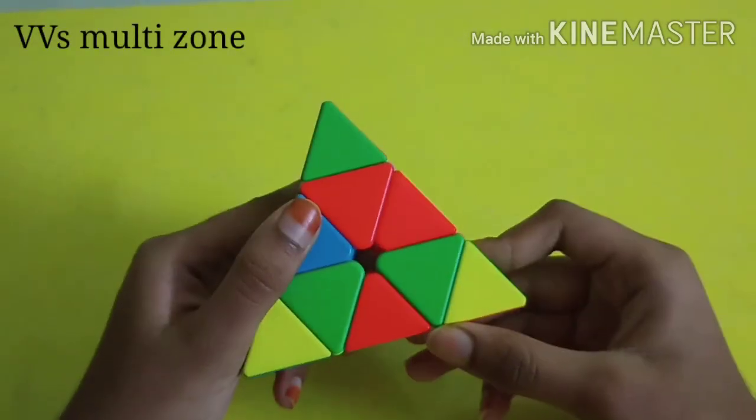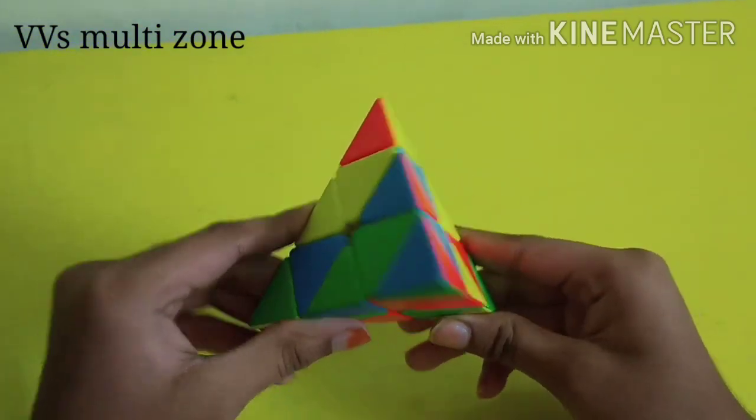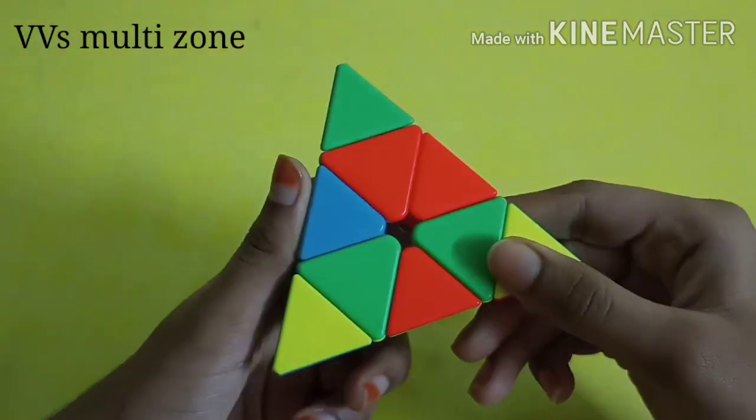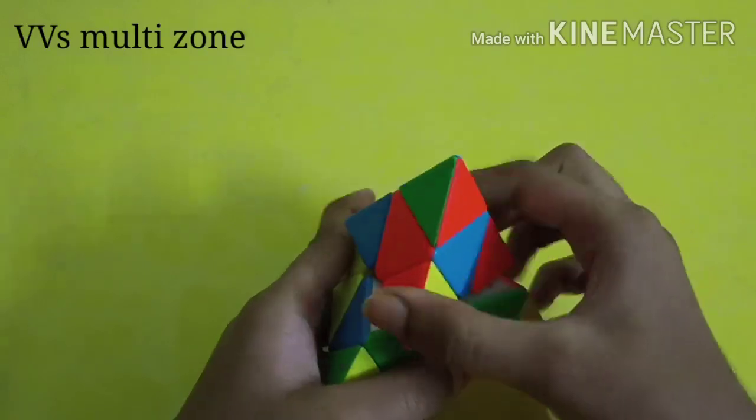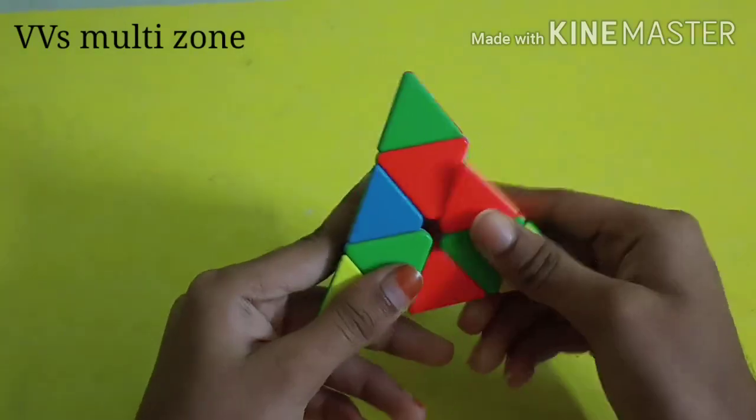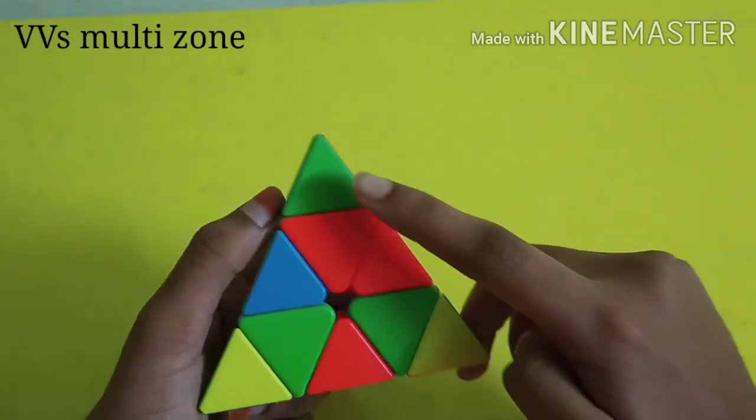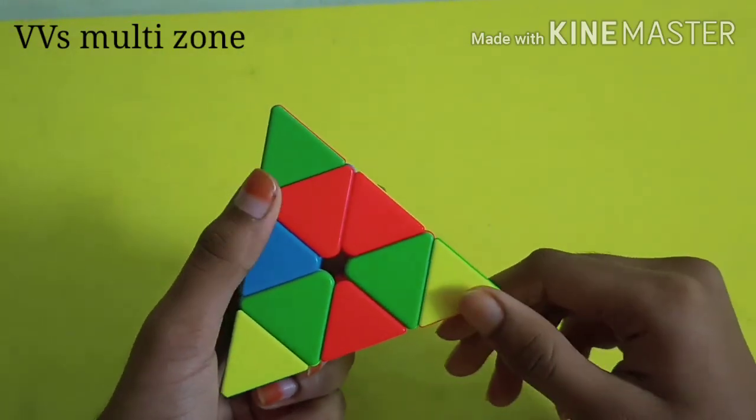Hello friends, welcome back to VB's multi zone. Today I am going to teach you how to solve this pyramid. In this pyramid you can move like this, like this, and like this. You cannot move these parts, and make sure that when you're matching the colors it should be the same. Let's move to the first step.